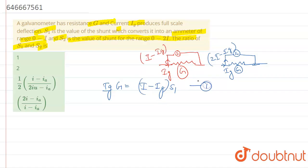is equals to I minus IG which is flowing in the shunt resistance 1, so this is equation number 1. Now again in the second shunt resistance we have IG multiplied by G that is equals to 2I minus IG multiplied by S2, that is second shunt resistance.